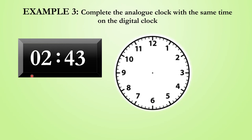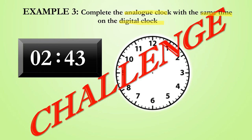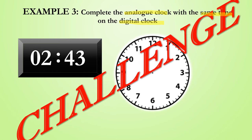Here we can see that the digital clock has been completed with the time while a blank analog clock face has been provided. We need to complete the analog clock with the same time that is shown on the digital clock. Pause the video now and try this example on your own, then press play when you are ready for us to work through it together.